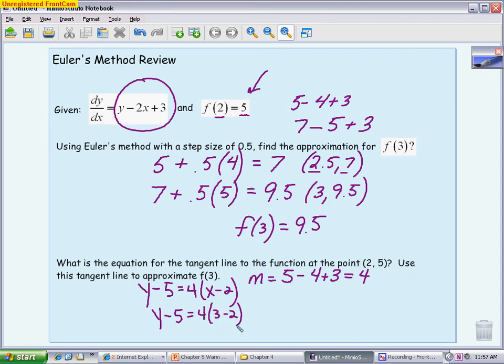4 times 3 minus 2 is 4, so I have y minus 5 equals 4. So using my tangent approximation, tangent line approximation, I get 9.